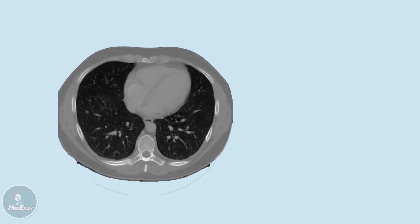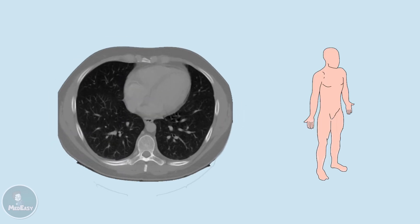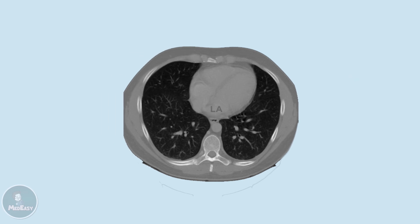This is a CT scan of the heart, taken on the axial plane just below the level of the main pulmonary trunk. You'll notice that the left atrium is the most posterior part and the right ventricle is the most anterior part. Because the left atrium is the most posterior and closest to the esophagus, enlargement of this chamber can compress the esophagus and cause dysphagia.